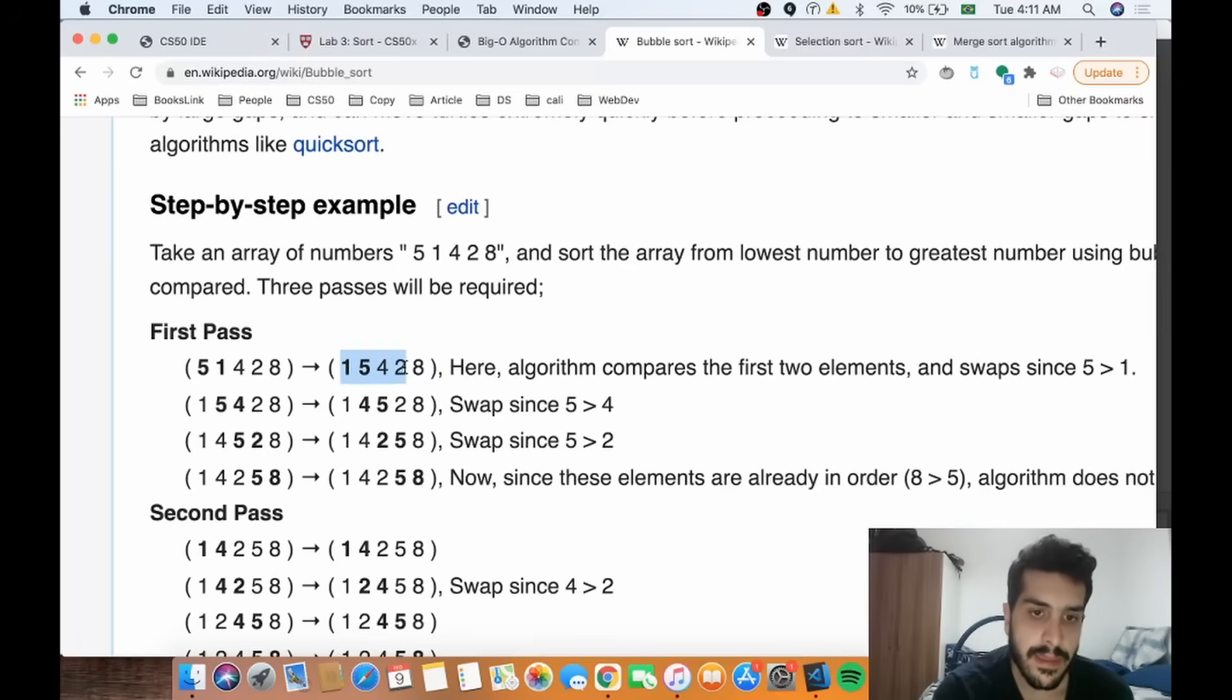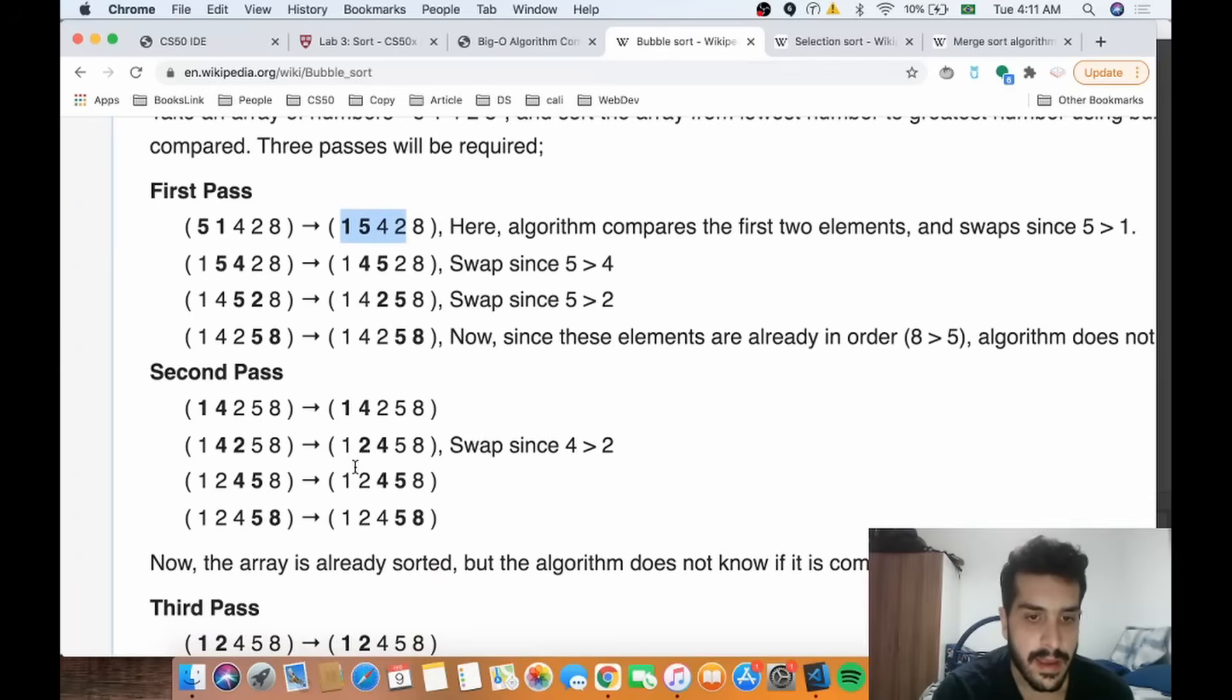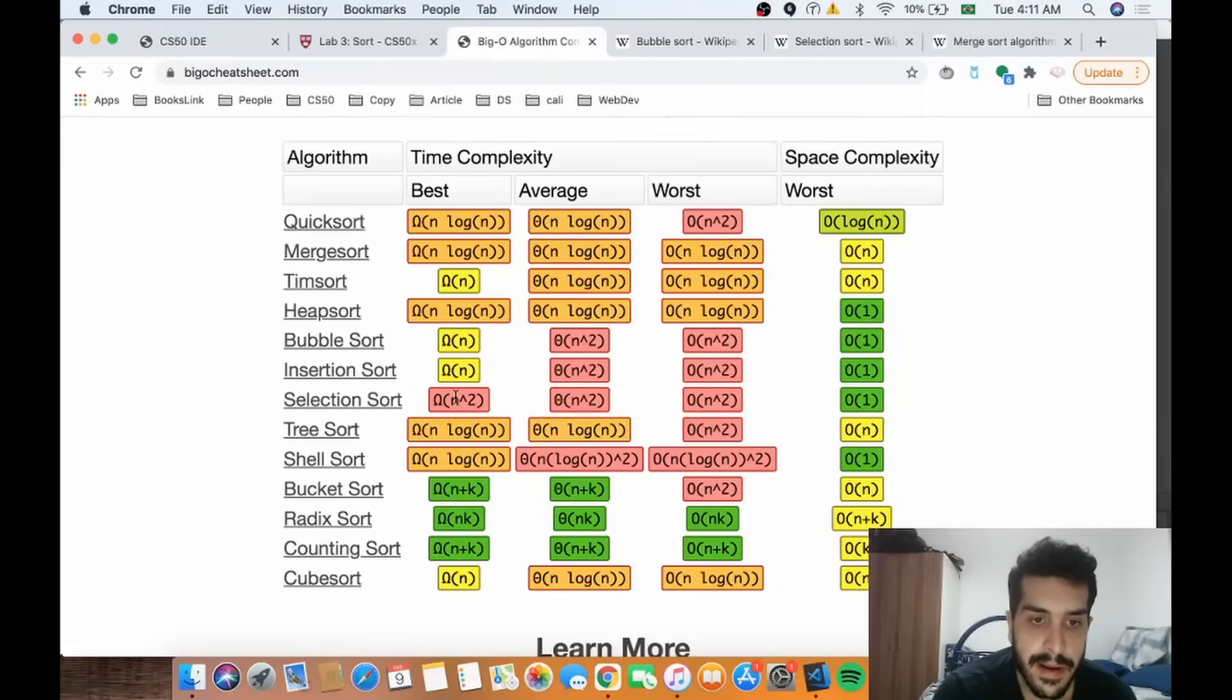And then we'll do everything again for the first values, then after this. So 5 will be placed here, we're gonna do that for 1, 2, 4, so on and so forth. So that's Big O of n² which is very inefficient.